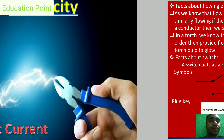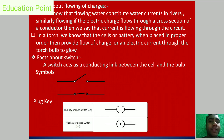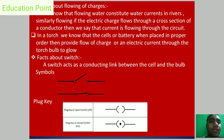As you know, flowing water constitutes the water current in rivers. Similarly, if water is flowing in a river, it means water current is flowing. In the same way, if electric charges flow through the cross-section of a conductor, we can say that current is flowing through that circuit. If some amount of electric charges are flowing, then electric current is flowing through the circuit.